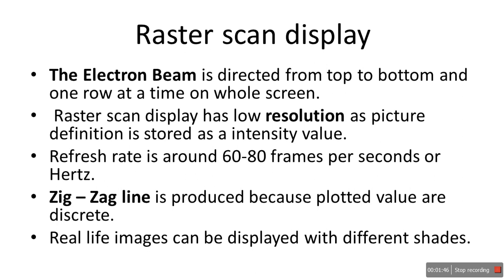Second difference: raster scan display has low resolution, whereas random scan display has high resolution. This is because raster scan display stores the picture definition as intensity values of each pixel, not just line drawing commands. Third point: refresh rate is around 60 to 80 frames per second. Fourth point: zigzag lines are produced because plotted values are discrete. Fifth point: real-life images can be displayed with different shades and colors.